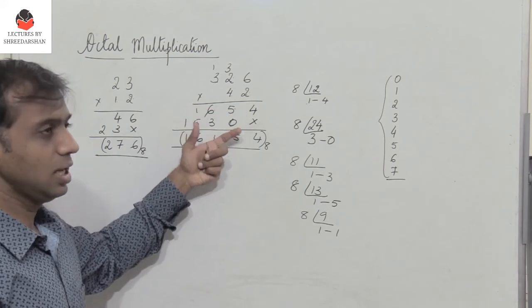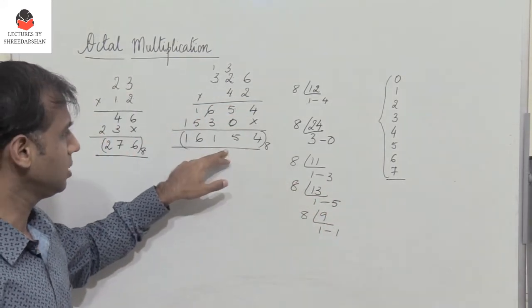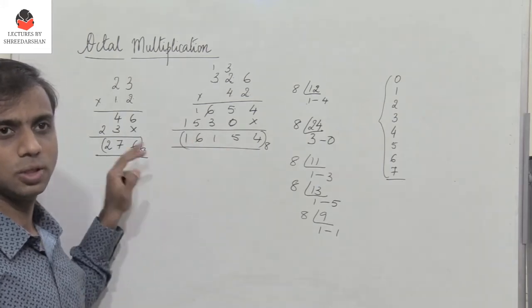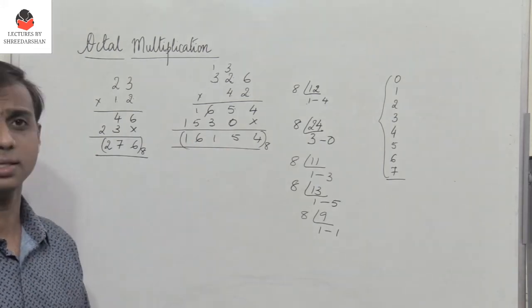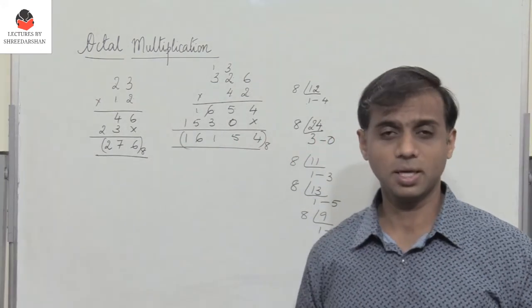And then when you have to add, again if the number goes beyond 7, again convert it to octal format and then continue with the process of addition. It's as simple as that. So I hope you have understood the process of octal multiplication.